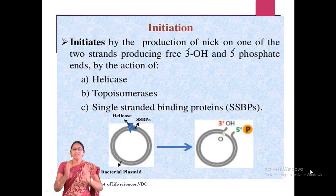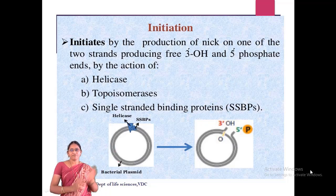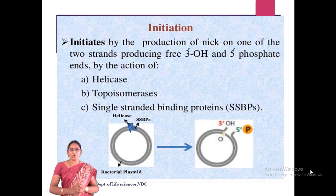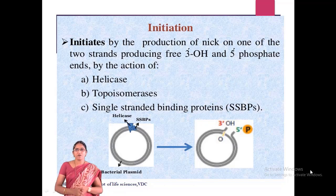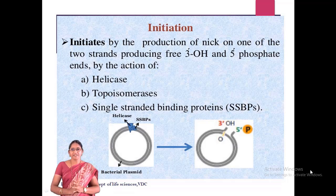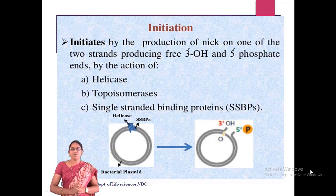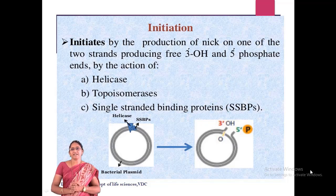Rolling circle mode initiates by the production of a nick on one of the two strands, producing free 3' hydroxyl and 5' phosphate ends by the action of helicase, topoisomerase, and single-strand binding proteins. The nick is formed by RecA protein, followed by strand separation with the help of helicase. Topoisomerases unwind the supercoils and facilitate the helicase enzyme to move along the phosphodiester bonds. Single-strand binding proteins bind to the separated strands and prevent re-annealing. The 3' hydroxyl group is thereby readily available to DNA polymerase to initiate DNA synthesis, using the inside circle of the DNA as template while the outer displaced circle gradually peels off as a thread.